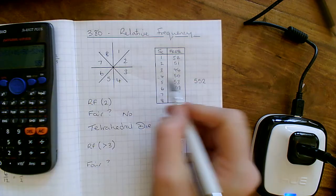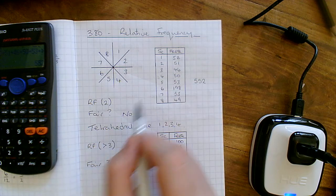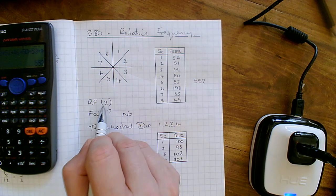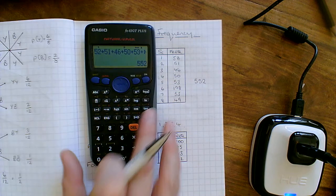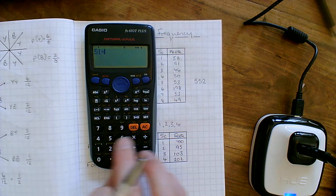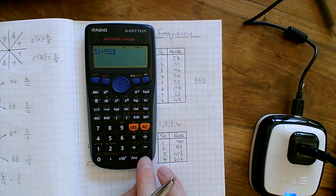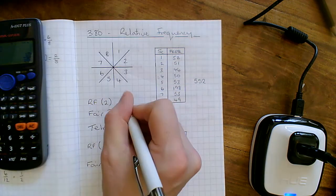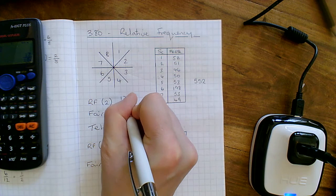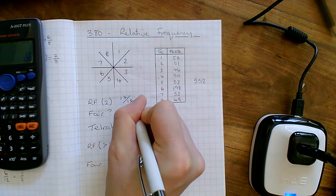So now, that's how many times it was spun to get those results. The relative frequency of getting a 2 is 51 out of those 552. So if I just do it on the calculator, it's 51 out of 552, which turns out to be 17 over 184. So 17 over 184.